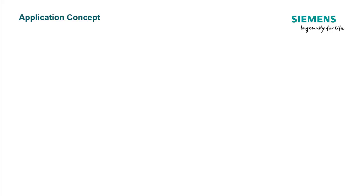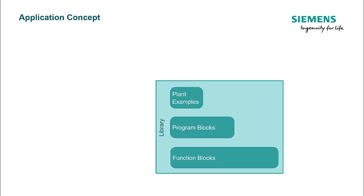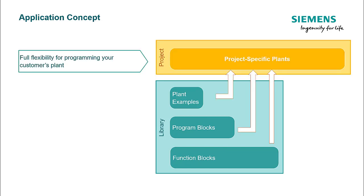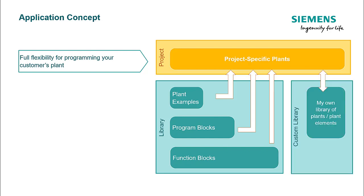Let's start understanding the concept by knowing the library. The programming library consists of various components like plants, program blocks, and function blocks. You can use these components to create your project-specific plants and save them to the custom library for future use.